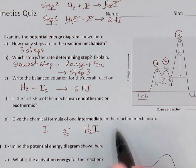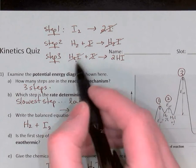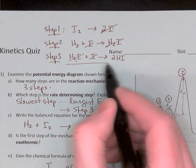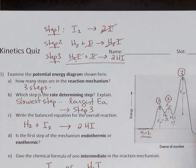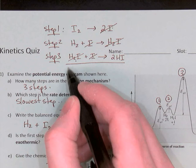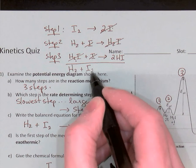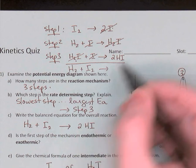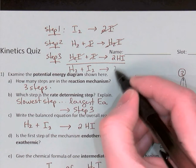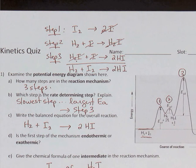Notice that if you look at whatever we didn't cancel out: on the left we have H₂ and I₂, and on the right we have just the two HIs, and that's the overall reaction we described in part C.